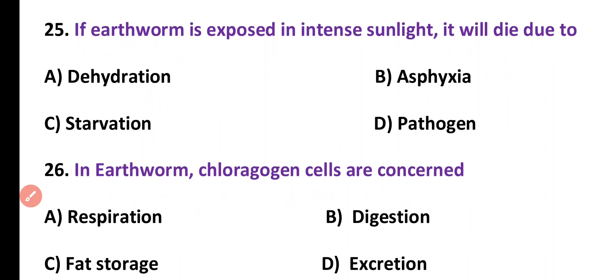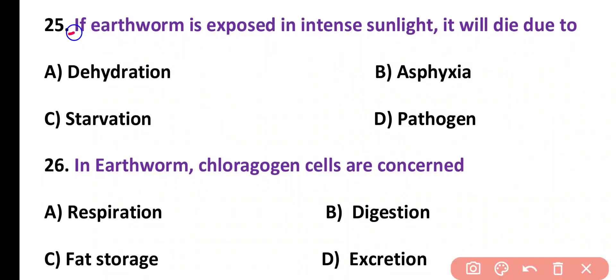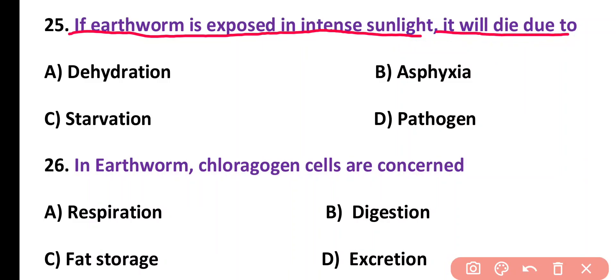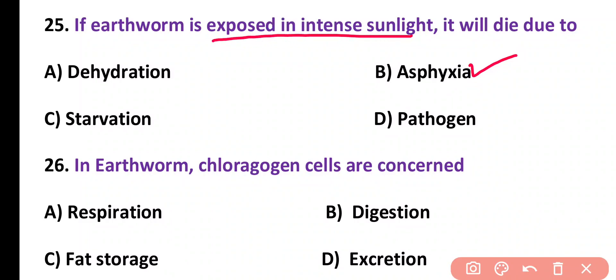Question number 25. If earthworm is exposed to intense sunlight, it will die due to: dehydration, asphyxia, starvation, or pathogens. Correct answer is option B. If earthworm is exposed to intense sunlight, it will die due to suffocation or low oxygen concentration; this condition is known as asphyxia.